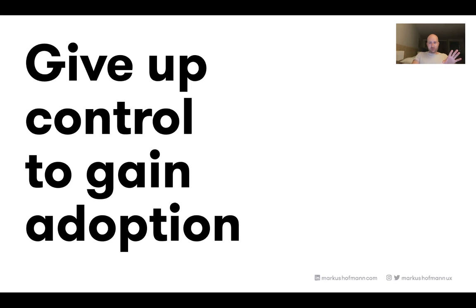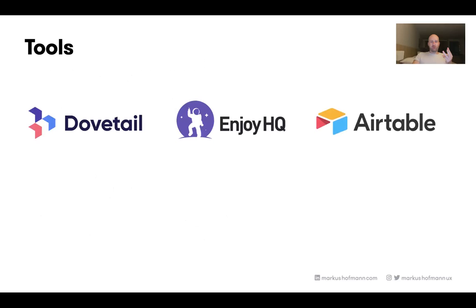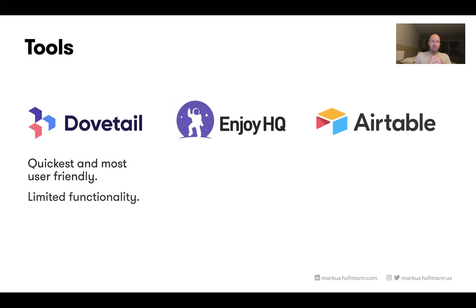Now for the most challenging topic: tools. This whole area is still very, very young and there's no ideal tool out there yet. I can show three tools — probably the three most promising and prominent ones. Dovetail and EnjoyHQ are specifically designed as research repositories. Dovetail comes from Australia, it's a well-funded startup, really easy to use, super quick, super user-friendly. The functionality is a bit limited especially in analysis, but the benefit is it's so easy to get started that literally everybody in the organization will be able to use it.